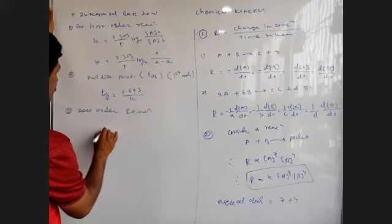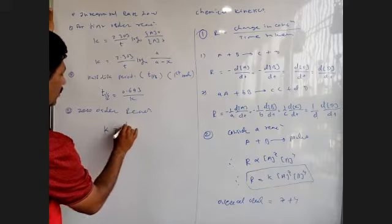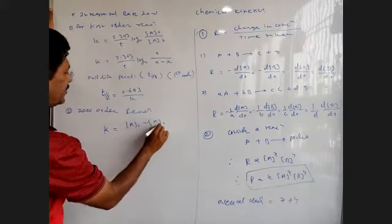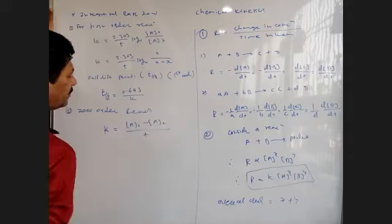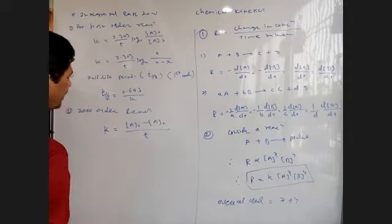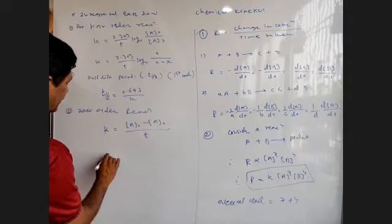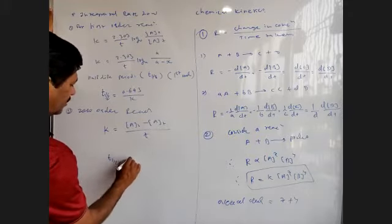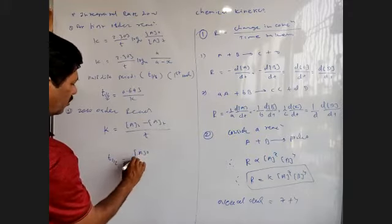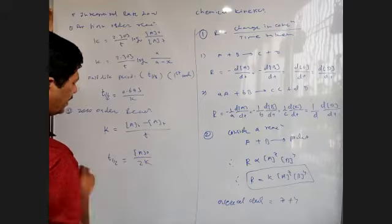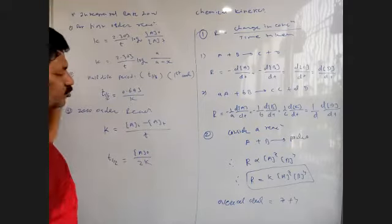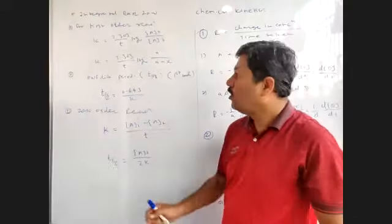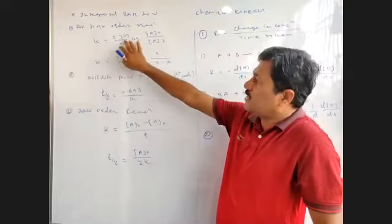For zero-order reaction, k = (A₀ − Aₜ)/t. These are the integrated rate laws for first-order reactions.